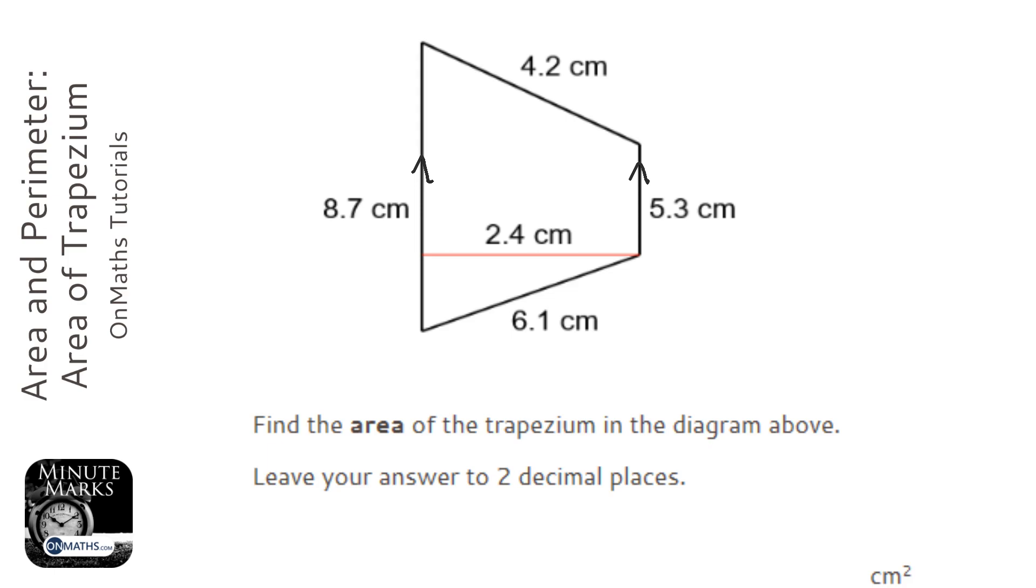And the formula for a trapezium is basically add the two bases together, then halve it and then times it by the height.